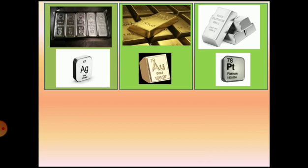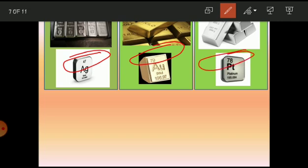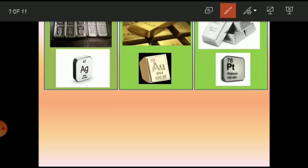Students, can you see the different elements with examples on the screen? We have three elements. The first one is silver whose atomic number is 47, second is gold whose atomic number is 79, and third is platinum whose atomic number is 78. Generally, we know that silver is cheaper than gold, and gold is cheaper than platinum. Platinum is highly costly.